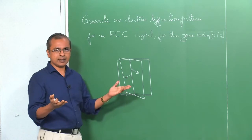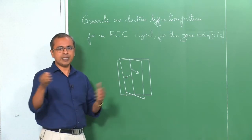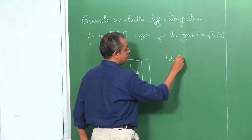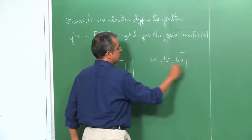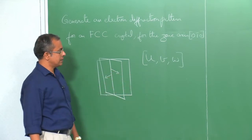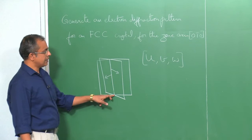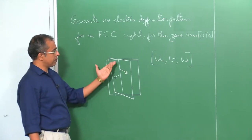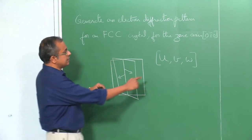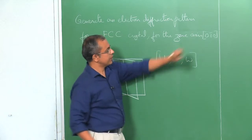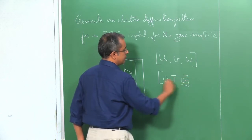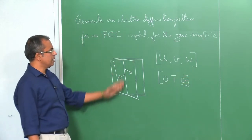The zone axis is a direction, a line in a crystal lattice. You can specify it as [u v w] using square brackets. You can look at all the planes that are perpendicular to it and they will belong to this particular zone. So the [0, 1̄, 0] that we are referring to in this question is the zone axis.